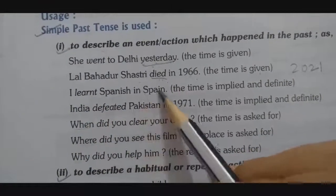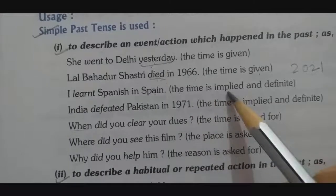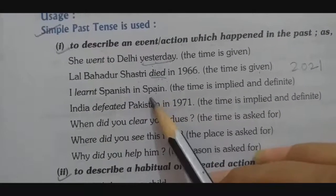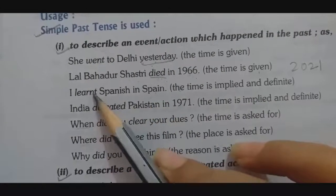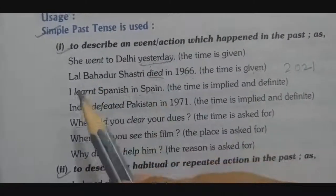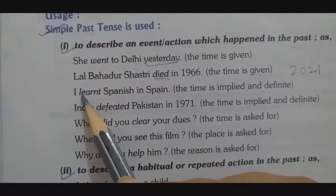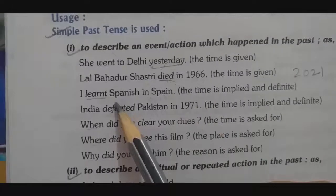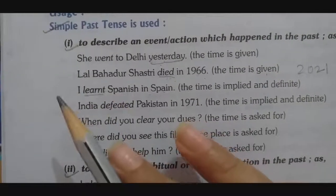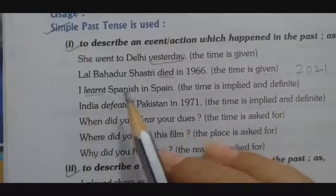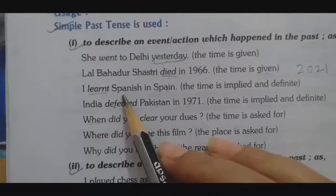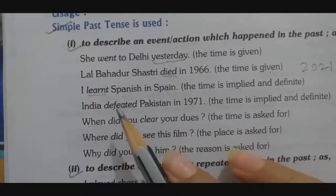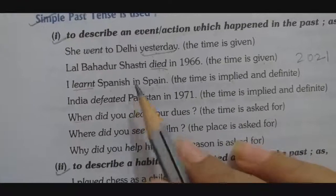Example three: 'I learned Spanish in Spain.' Here the time is implied and definite — you have already studied Spanish. The verb 'learned' is simple past tense because the action is already completed; in the past, you learned it.